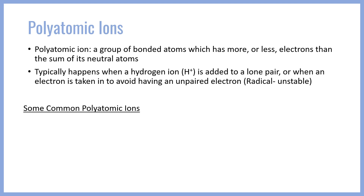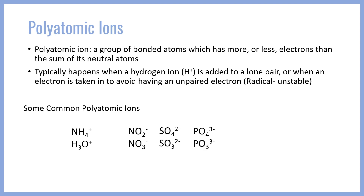Some very common polyatomic ions include ammonium and hydronium for our positive ions, as well as some nitrogen ions: nitrite and nitrate, NO2- and NO3- respectively. There are also some common sulfur-based ions, SO4 2- and SO3 2-, sulfate and sulfite. Some phosphorus ions: PO4 3- and PO3 3-, phosphate and phosphite.